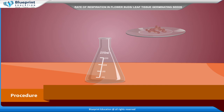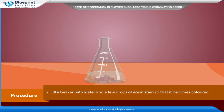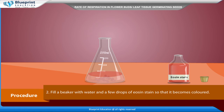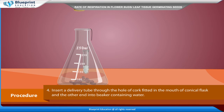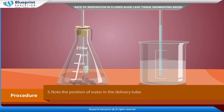Procedure: Take a conical flask and put some germinating seeds of gram, pea, bean, or flower buds. Fill a beaker with water and a few drops of eosine stain so that it becomes colored. Hang a glass tube in the flask containing KOH. Insert a delivery tube through the hole of the cork fitted in the mouth of the conical flask, and the other end into the beaker containing water. Note the position of water in the delivery tube.